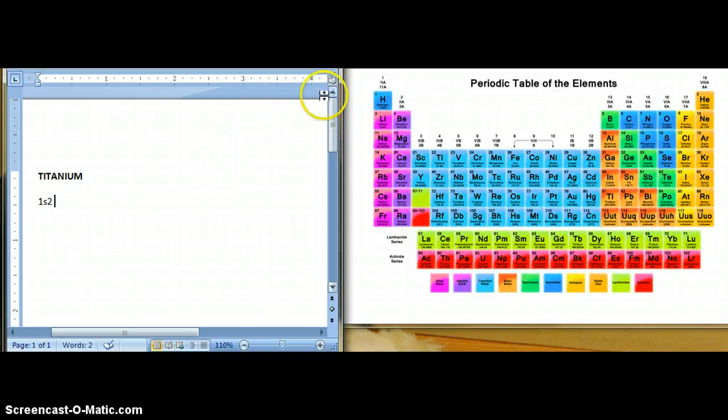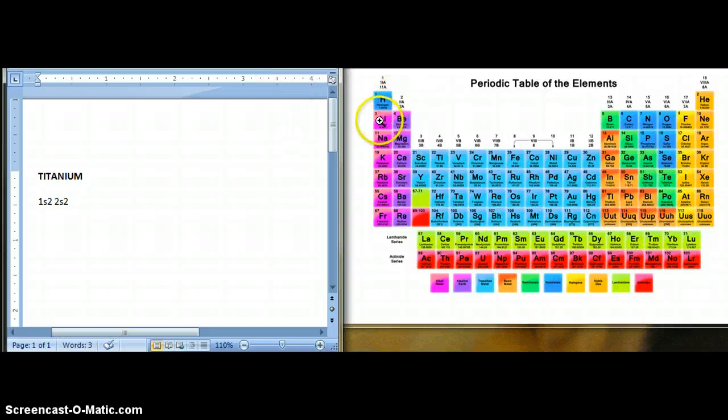So for the next level, you go to row 2 and you're still in energy level S and it holds up to 2 electrons. But for the next level, you don't go down to row 3 yet because you have to go to the P level because it's also in row 2.